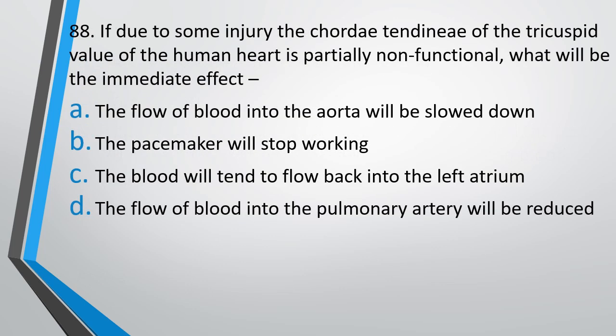Question number 88: If, due to some injury, the chordae tendineae of the tricuspid valve of the human heart is partially non-functional, what will be the immediate effect? Options: flow of blood into the aorta will be slowed down; pacemaker will stop working; blood will tend to flow back into the left atrium; or flow of blood into the pulmonary artery will be reduced. The correct answer is Option D — the flow of blood into the pulmonary artery will be reduced.